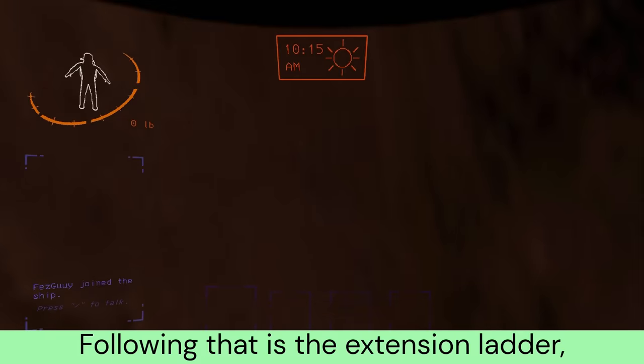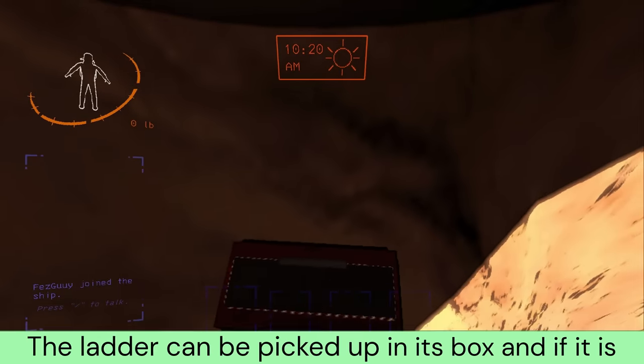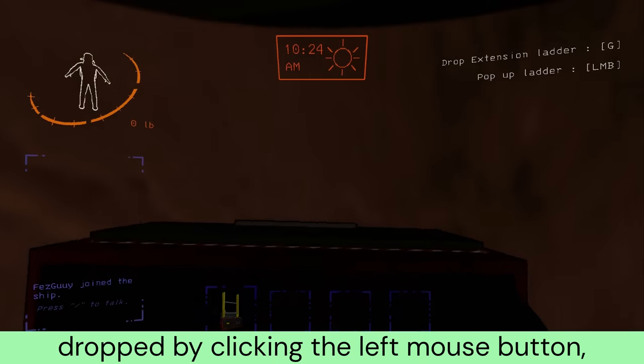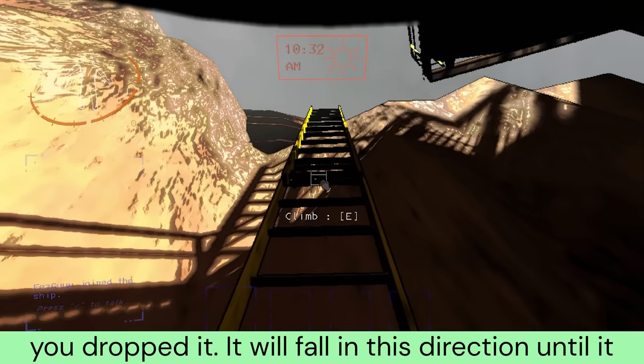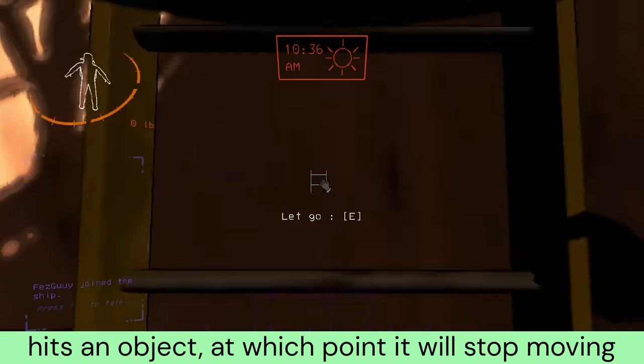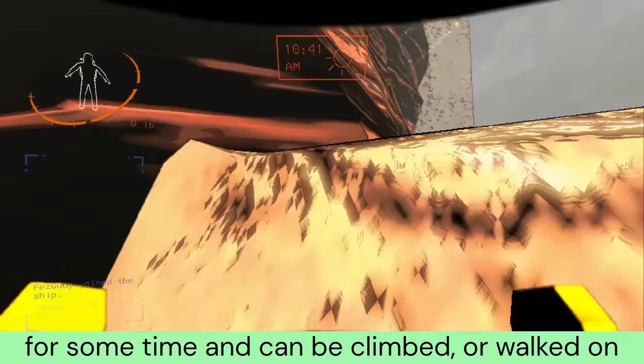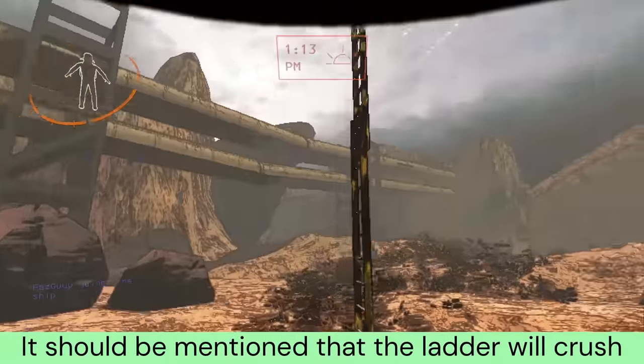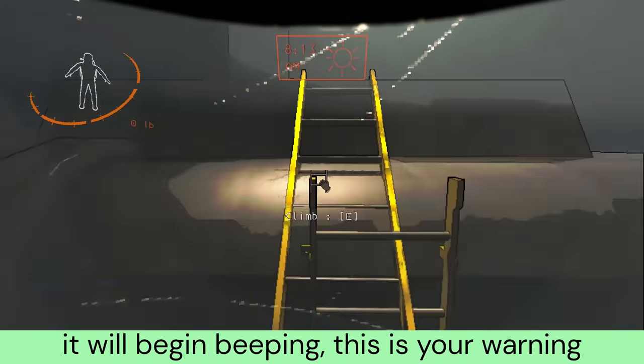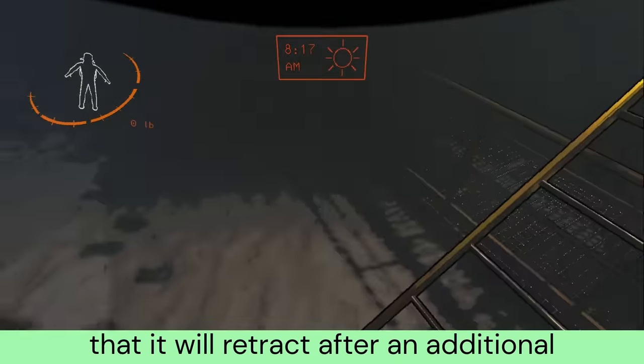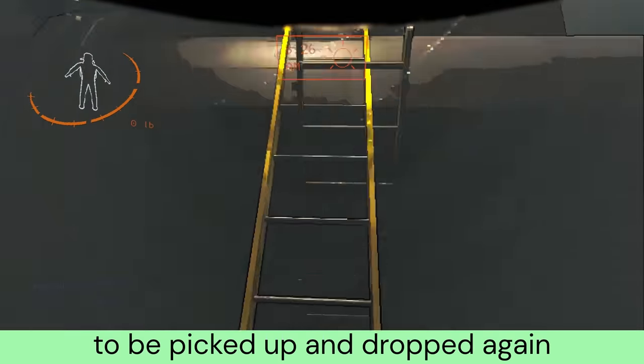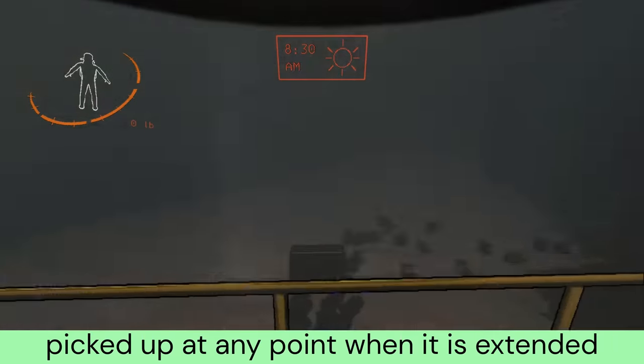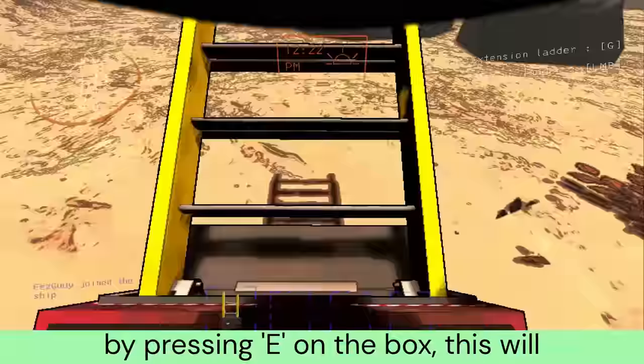Following that is the extension ladder, which costs $60 and does not have a weight. The ladder can be picked up in its box and if it is dropped by clicking the left mouse button, it will extend upwards after a short delay, before falling towards the direction you were facing when you dropped it. 15 seconds after dropping the ladder, it will begin beeping. This is your warning that it will retract after an additional 5 seconds. The ladder can be picked up at any point when it is extended by pressing E on the box.